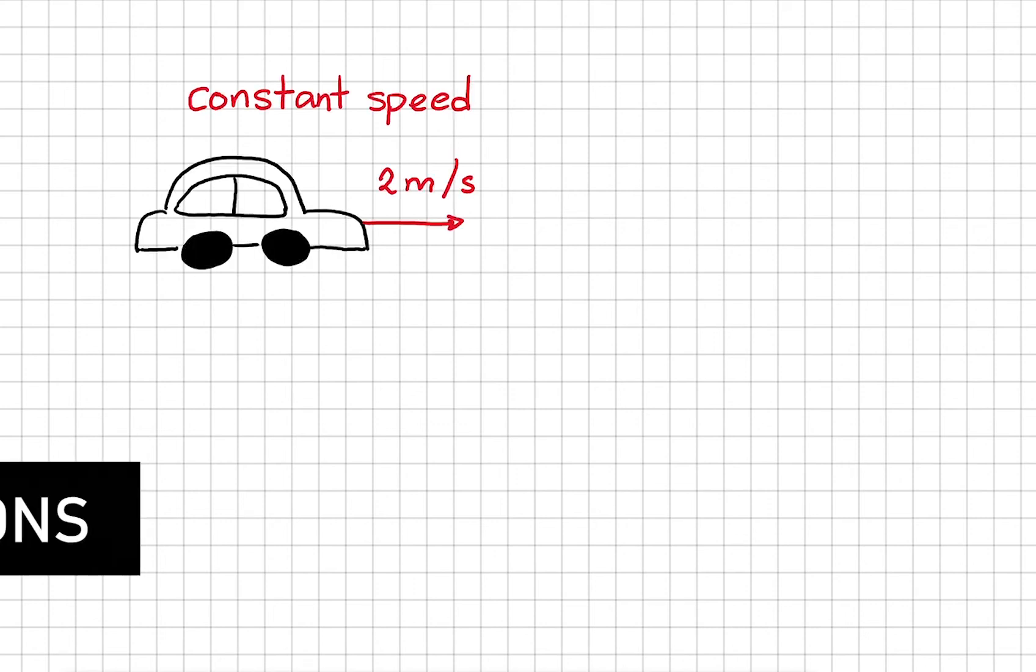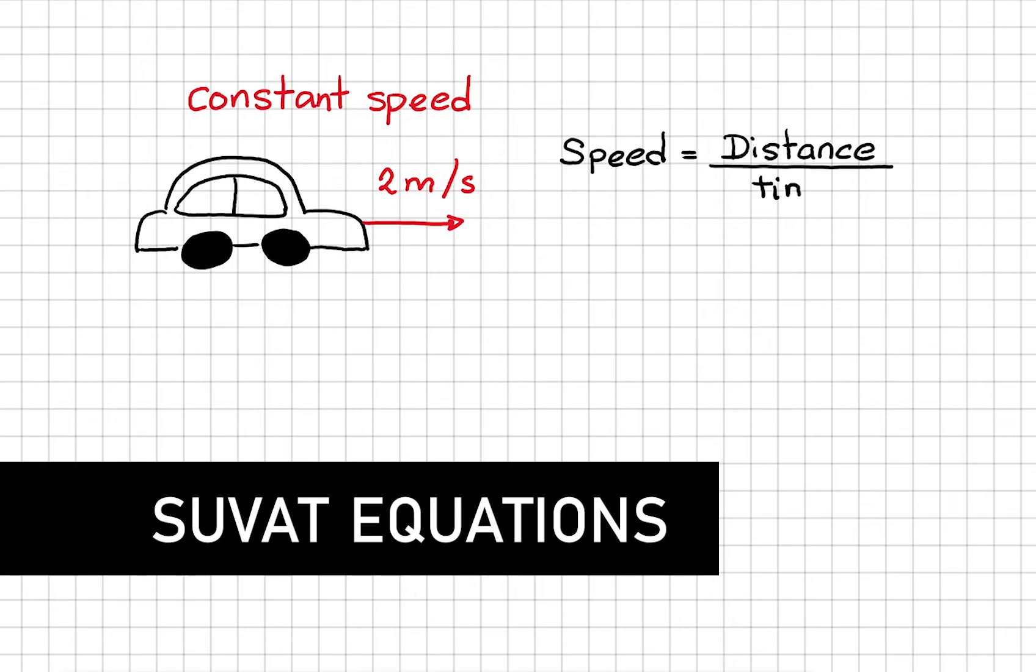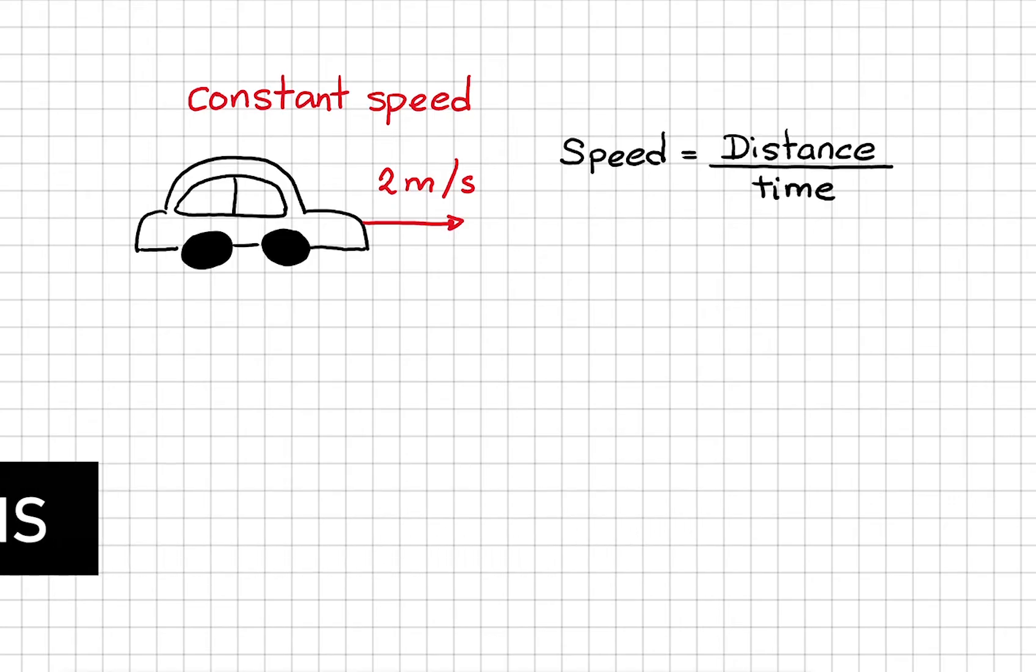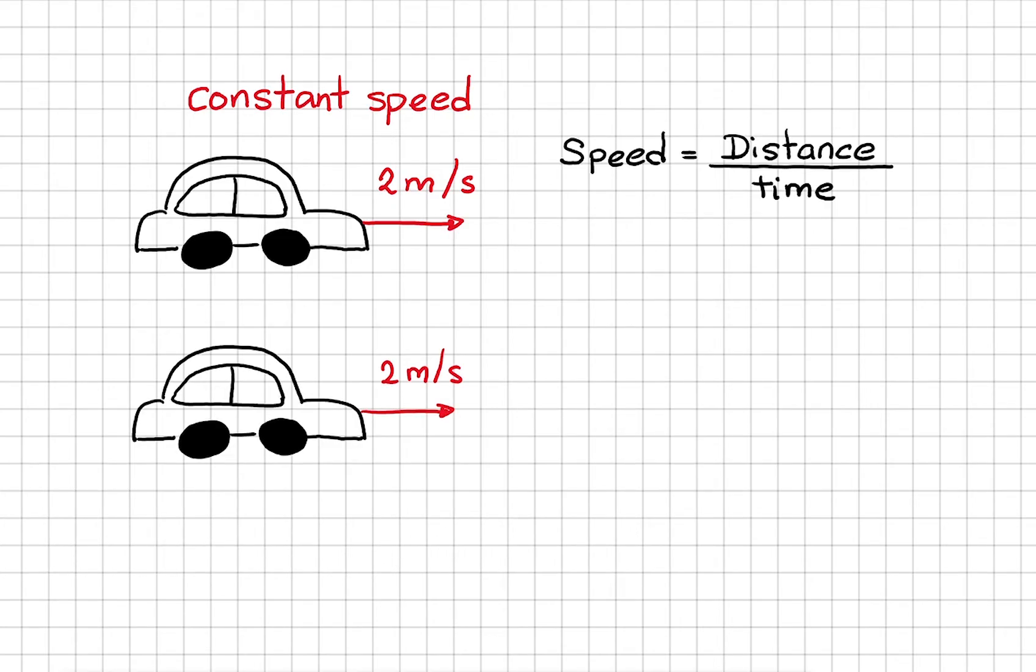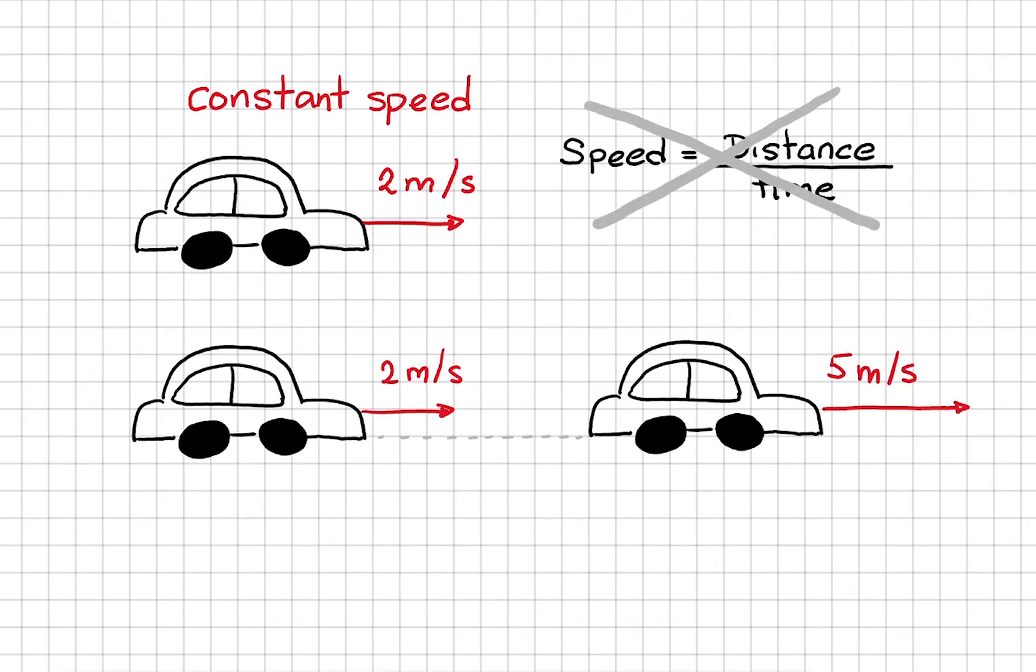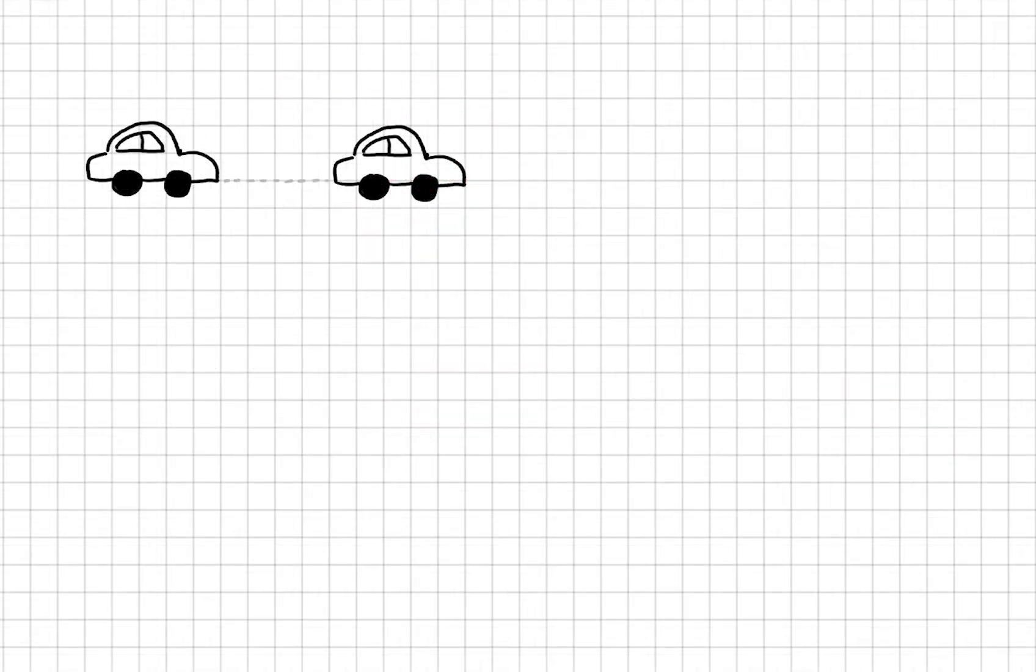If we have a car traveling at a constant speed, we can simply find its speed by doing distance over time. In another situation, this car starts with a certain speed and then it speeds up. This equation wouldn't work now because it's only applicable to an object traveling with a constant speed. We need to use some other equations of motion.